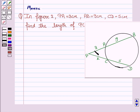In figure 2, PA is 3 cm, AB is 9 cm, CD is 5 cm. Find the length of PC. Let us now move on to the solution.